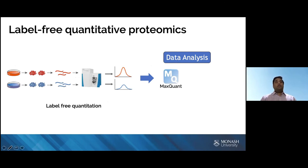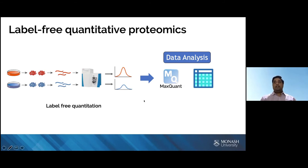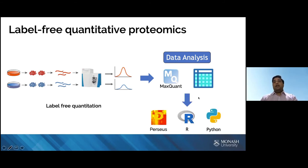After performing analysis with MaxQuant, you get a large table where each row represents a protein group and columns contain, among other information, the quantities of those proteins across different samples. In the proteomics field, these quantities are called protein intensities. Once you have this table, you have different options for further analysis to gain functional insights.